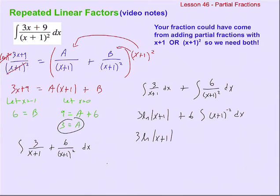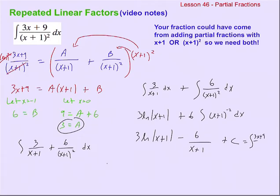We don't need to worry about logs at all. Using the power rule, it's six times x plus one to the negative first, divided by negative one — but that amounts to the same thing. And that would be the final answer for the antiderivative of 3x plus nine over x plus one squared dx.